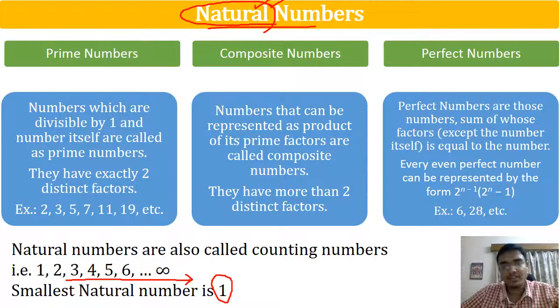There are no fractions, no decimals, nothing — only direct counting: 1, 2, 3, 4, 5, 6, 7, 8, 9, 10, and so on.